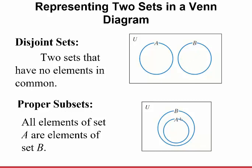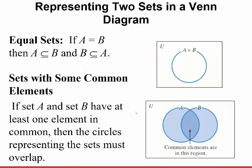For proper subsets, all elements of set A are in set B. So if A is the numbers 2, 3, 4, 5, and set B is the numbers 1, 2, 3, 4, 5, 6, then A is a proper subset of B, so it would be contained within circle B. For equal sets, if A equals B, then A is a subset of B and B is a subset of A — the circles would just be right on top of each other.